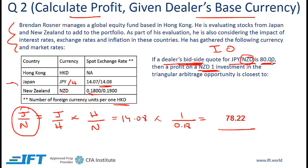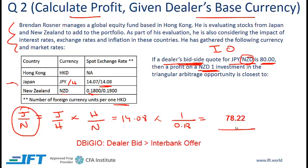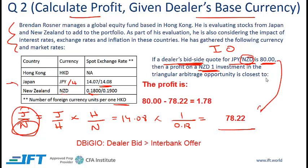In the dealer market we have 80.00. There is an arbitrage opportunity because the dealer bid is greater than the interbank offer. On one New Zealand dollar — the base currency — the profit will be measured in Japanese yen. That profit is the difference between these two numbers.